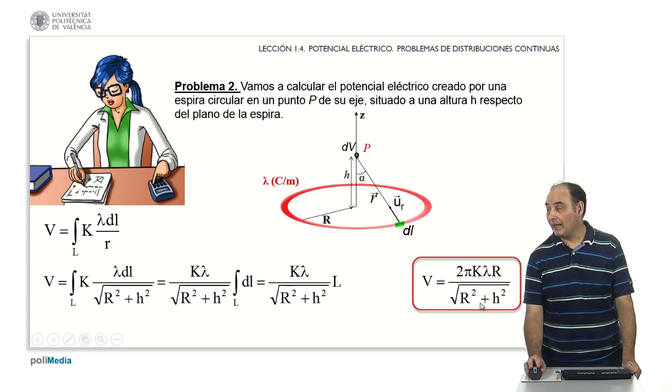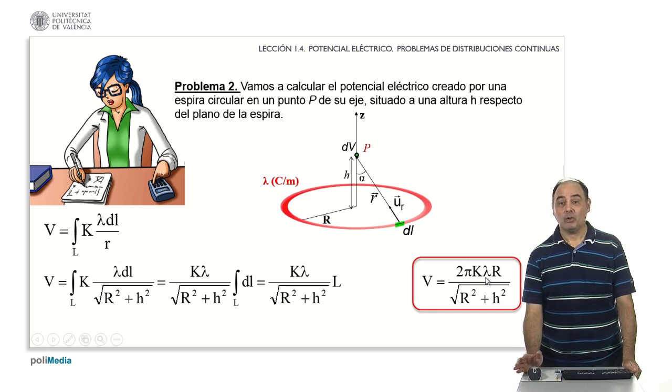And uppercase R with uppercase R would cancel, and I would be left with 2πkλ, which, if you remember, is the formula that I came up with doing it directly in the theory part for what the potential was at this point.